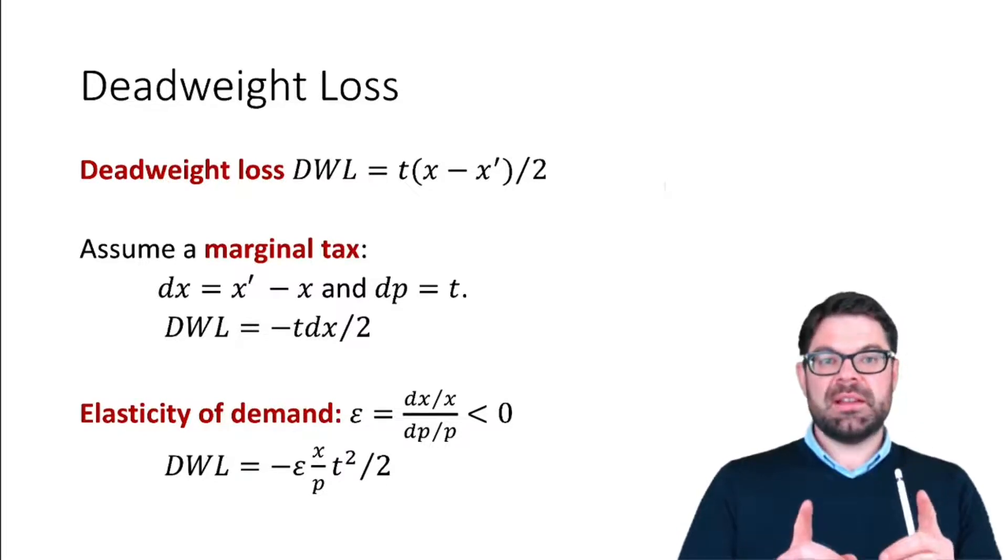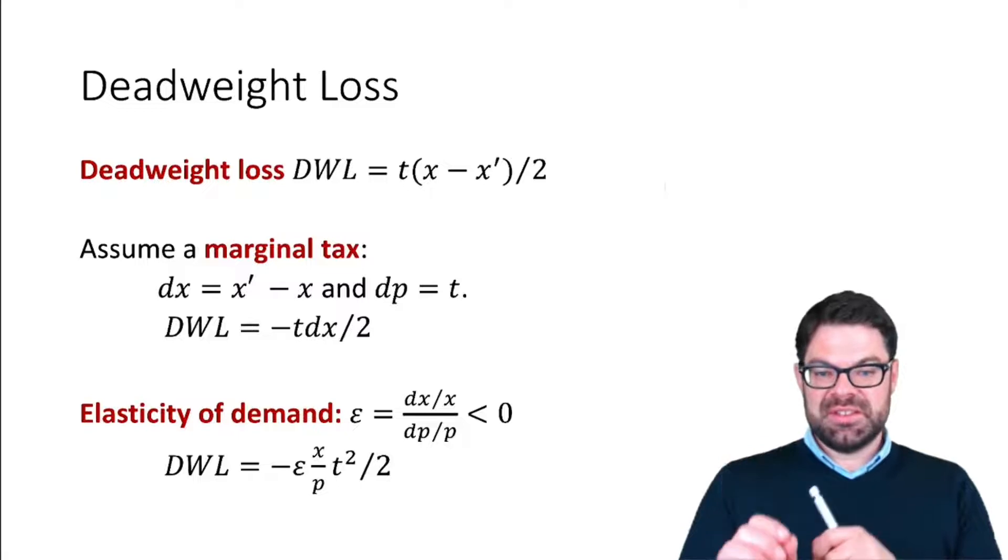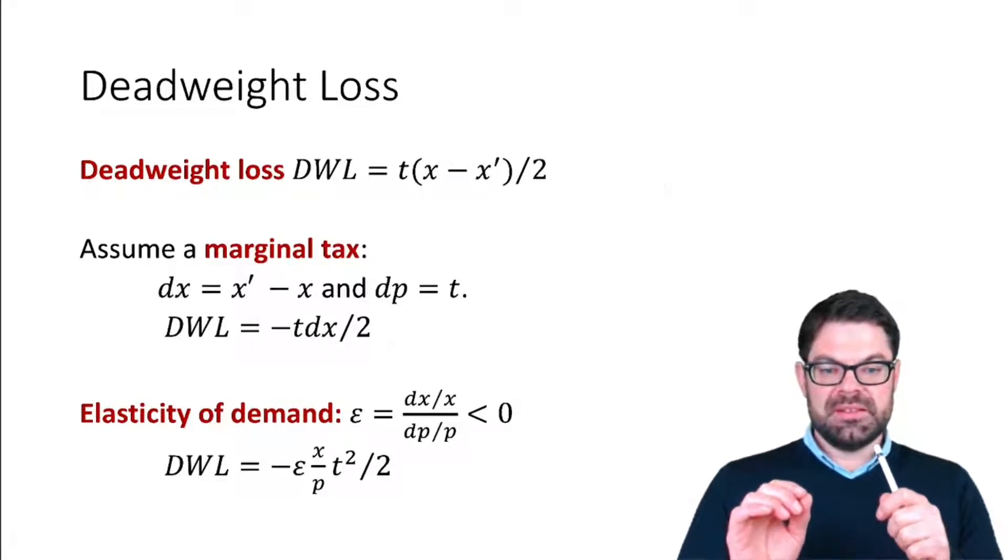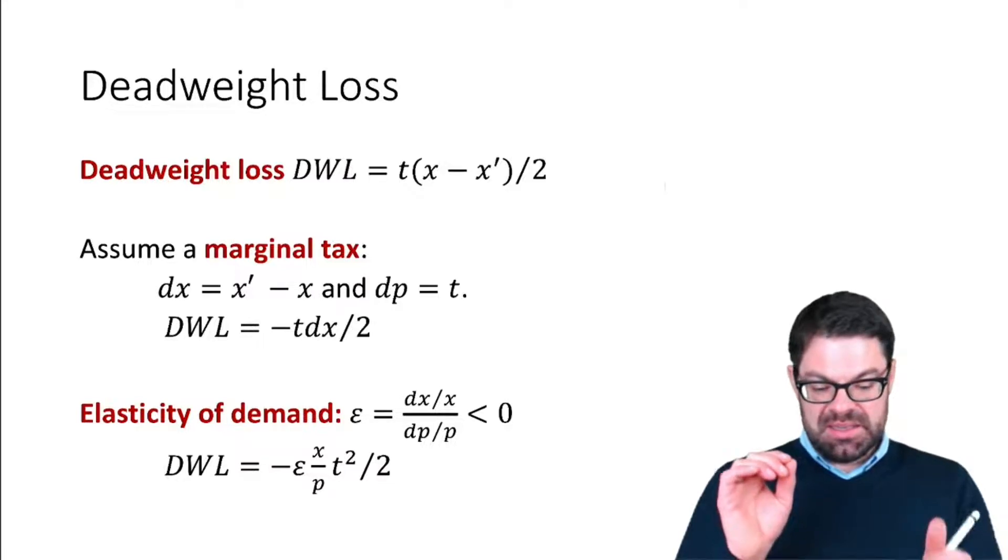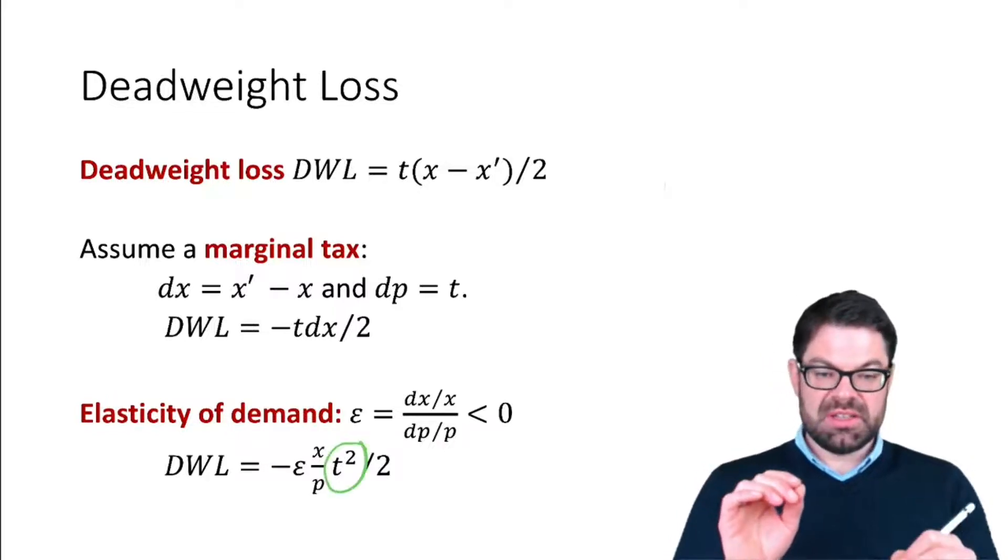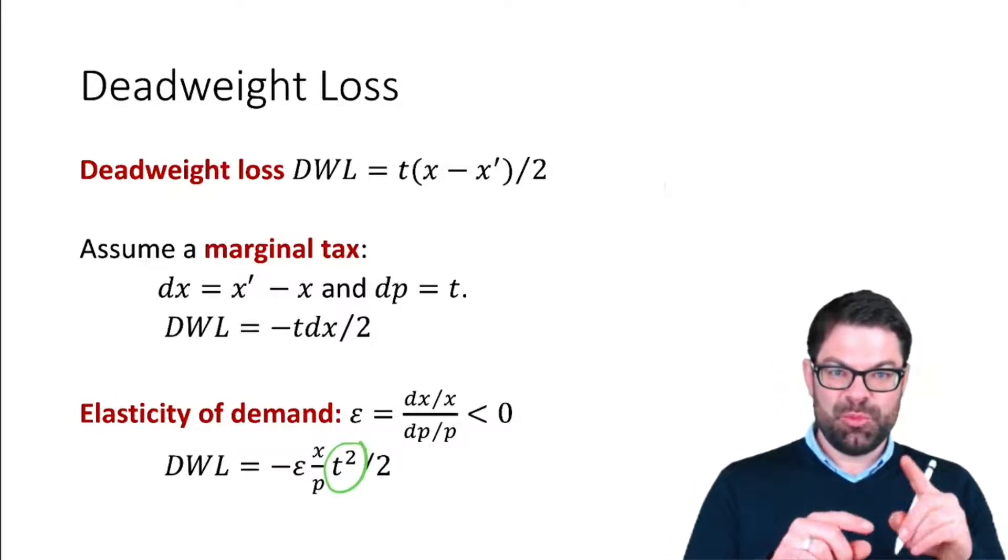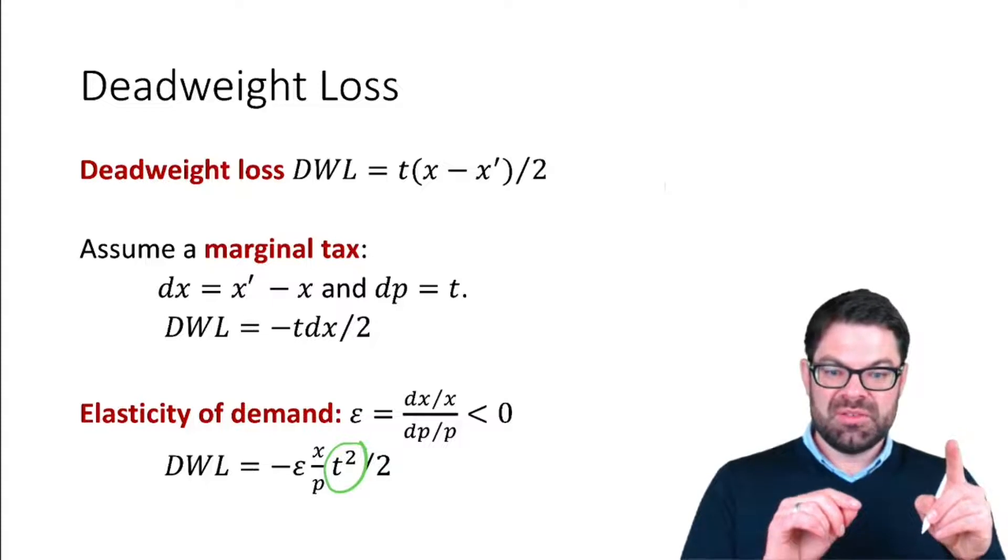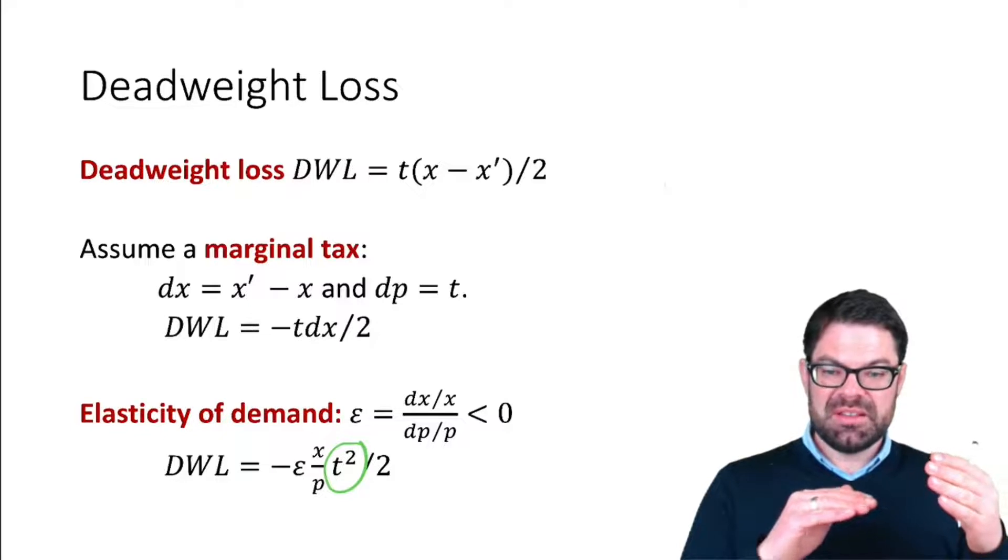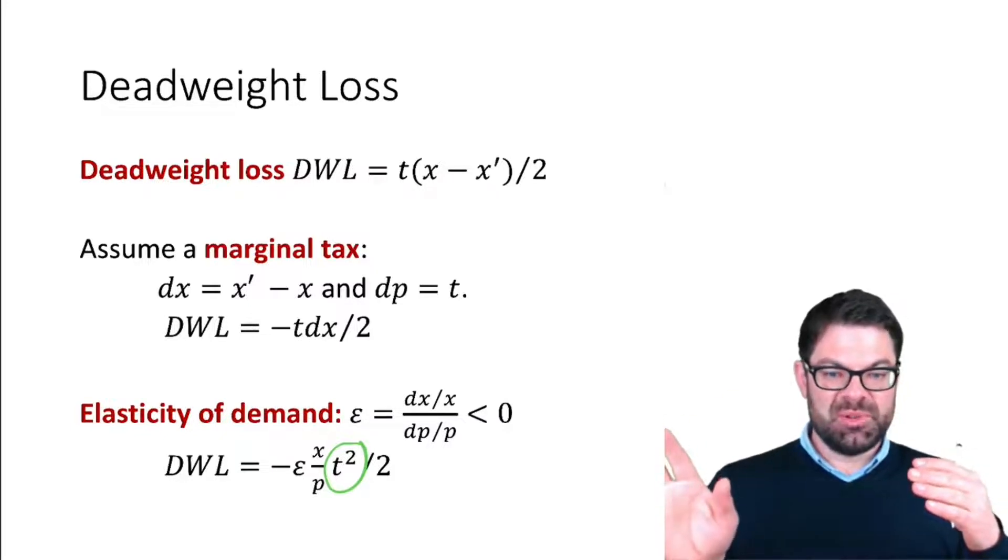The two important factors here are the elasticity and the tax. What's interesting is that the deadweight loss is proportional to the tax, but not to the tax itself but to its square. So what does that mean? If the tax doubles, the deadweight loss more than doubles.